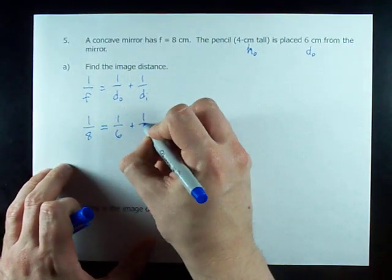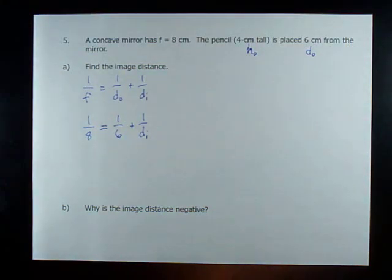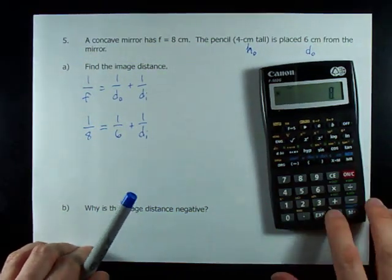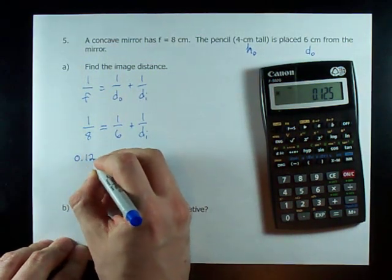We don't have 1 over D_I. That's what we're going to be solving for. Now we need to do a little math. 1 divided by 8 gives me 0.125.